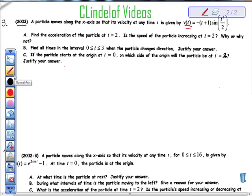This question happens to be off the 2003 exam and it says a particle moves along the x-axis so its velocity at any time t is given by the velocity function v(t) equals the opposite of the quantity (t+1) times sine of t squared over 2. I really suggest you read through the whole thing. We're asked to find the acceleration of the particle at t equals 2, whether the speed is increasing, and find all times in the interval 0 ≤ t ≤ 3 when the particle changes its direction.